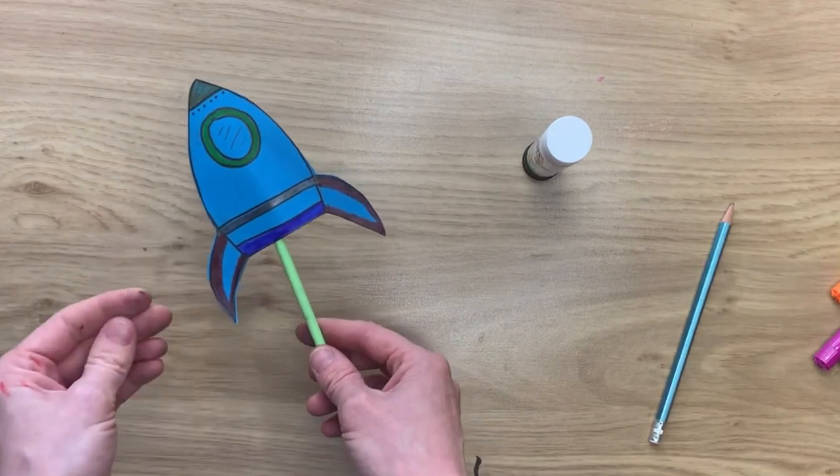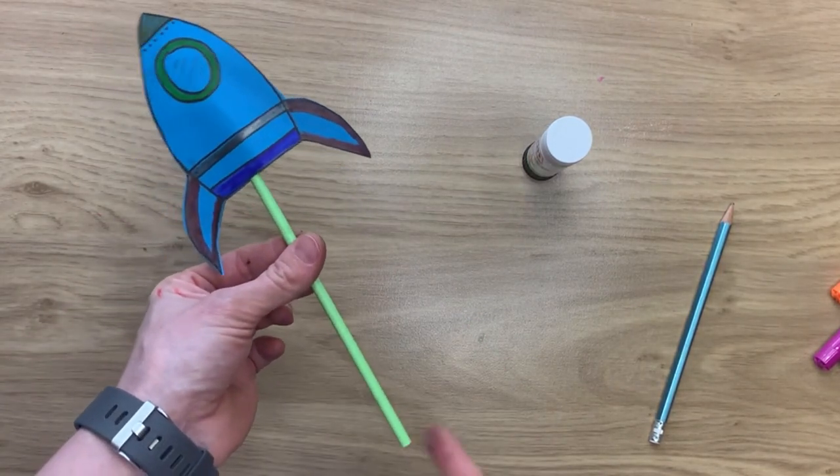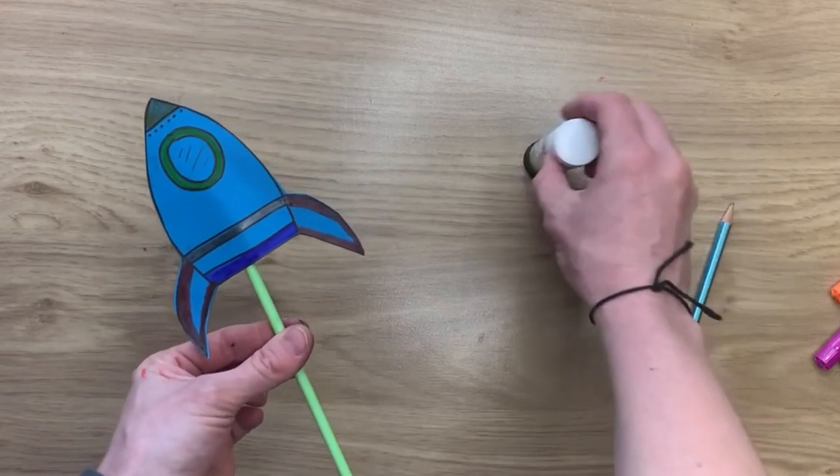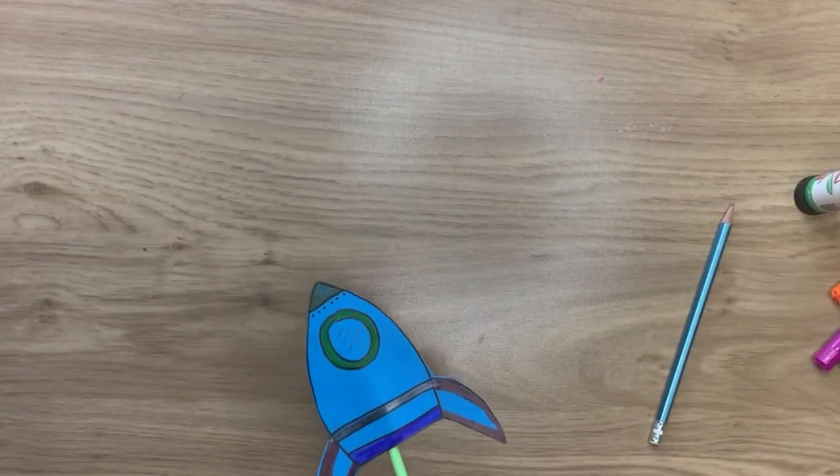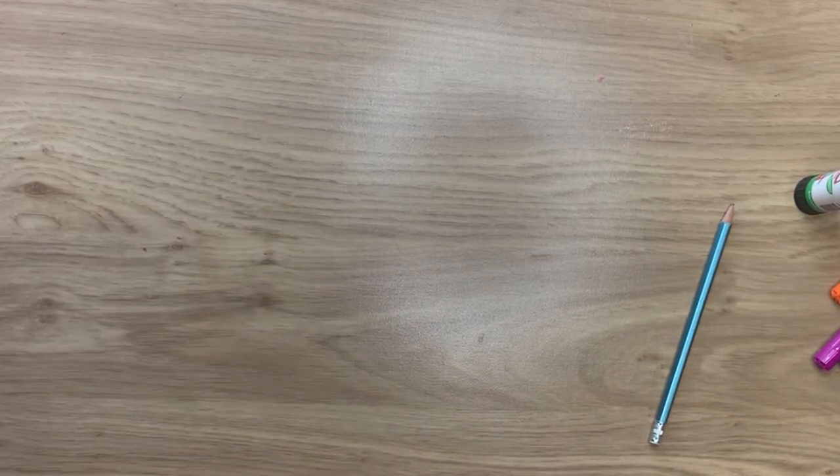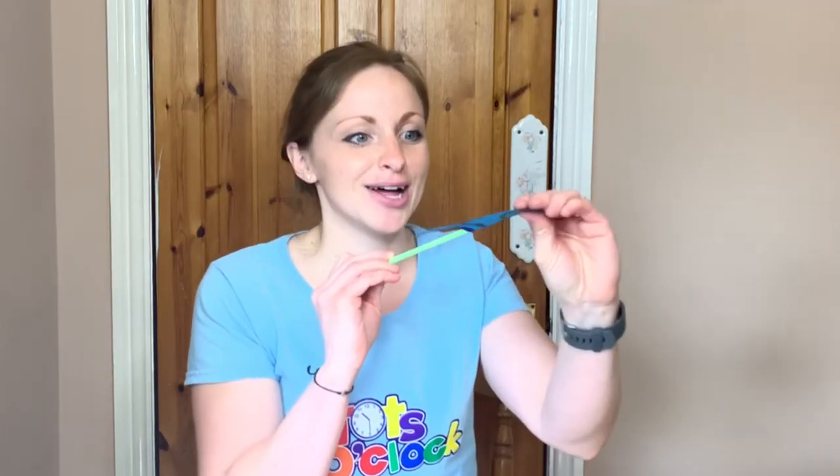So then you just need to test it out. So you just need to blow into this end and it should fire the rocket off at that end. Let's have one quick go on here. Ready? And I'll show you from this angle as well. Are you ready?